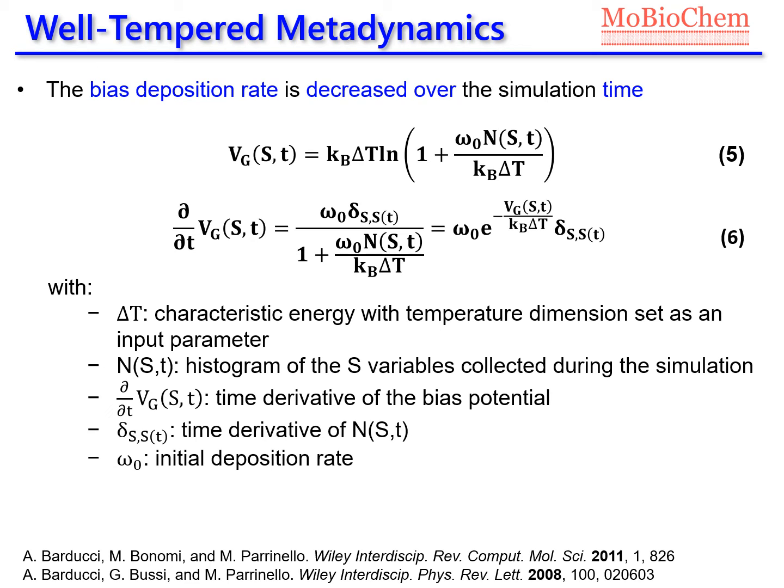To achieve this, the bias potential and its time derivative can be described as shown in equations 5 and 6, where delta T is a new input parameter that controls how quickly the Gaussian height is decreased.